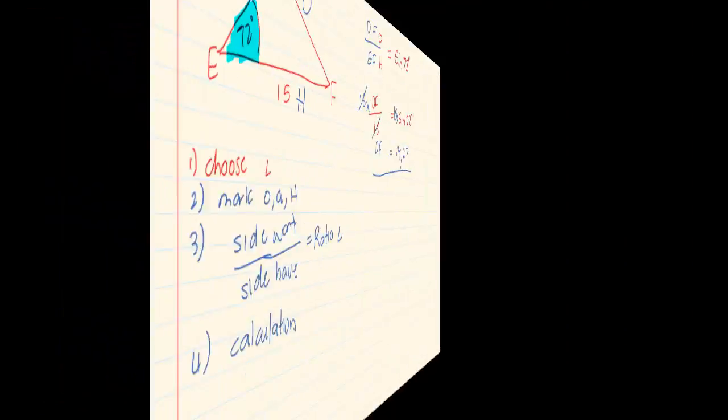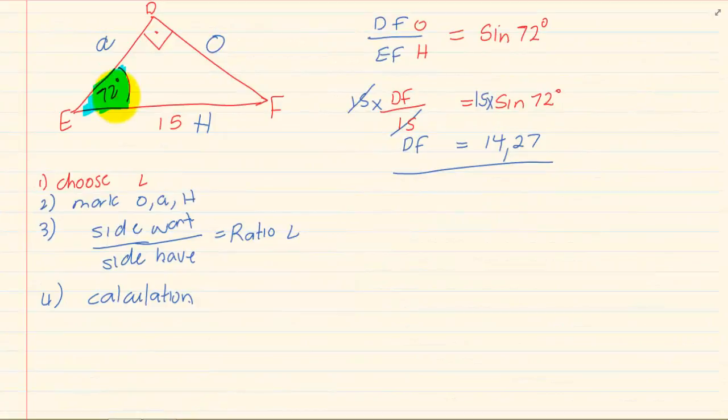If I was given maybe an angle and a side, I'll again choose my angle, mark what I want, I'll say side I want over side I have, get my ratio and use calculation. So the two methods are the exact same methods that you're going to use when you're doing 2D triangles.